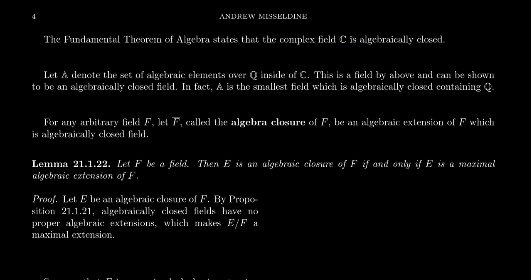If you look at the field Q versus the field C, Q does live inside the complex numbers. But the complex numbers, in addition to having algebraic elements over Q — like i, the square root of 3, which are algebraic numbers over Q — there are other things like pi and e, which are transcendental numbers, not algebraic over Q.